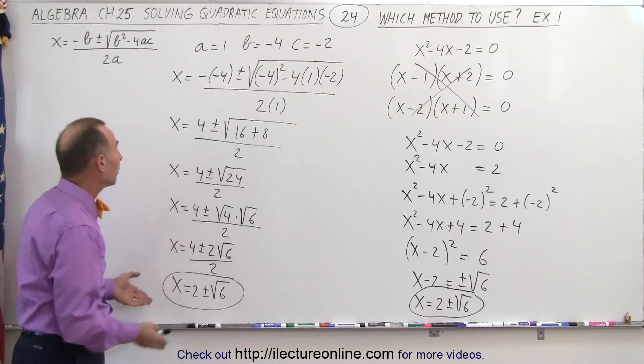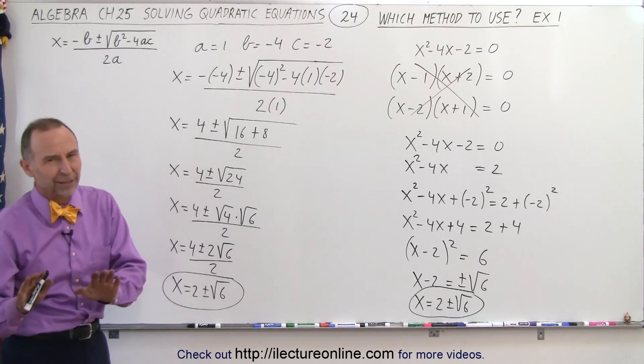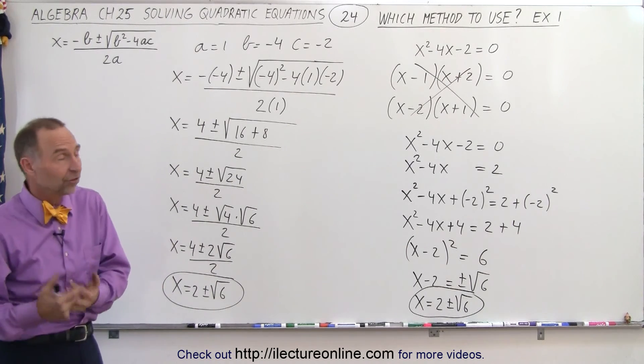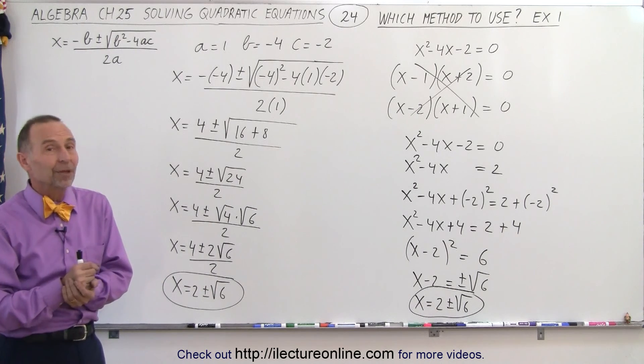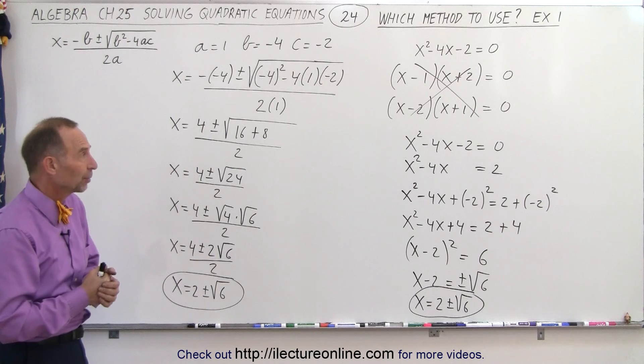Then we tried the completing the square method and we got this result and we tried using the quadratic formula. Notice that completing the square method the quadratic formula will always give you the right answer. Well if you don't make a mistake but will always work I should say. Factoring is the fastest way but it doesn't always work. In this case there was no nice solution that we were able to factor.